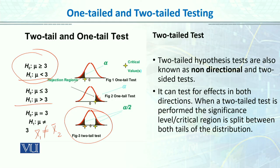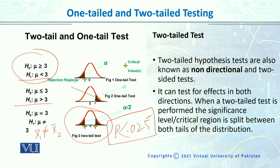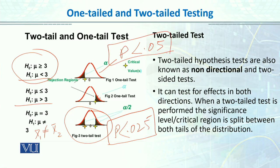In a two-tail test, remember that you compare the test value and the critical value, and the alpha level will be split. In two-tail testing, we compare the p-value with 0.025 if we have a 5% significance level. We compare the p-value to the alpha level, which we split for two-tail. But if we have a one-tail test, then p should be smaller than 0.05 — the whole 5% area is on one side. This is the only difference: we split our area, and as a result, the alpha level, the p-value, and the z-value all change.